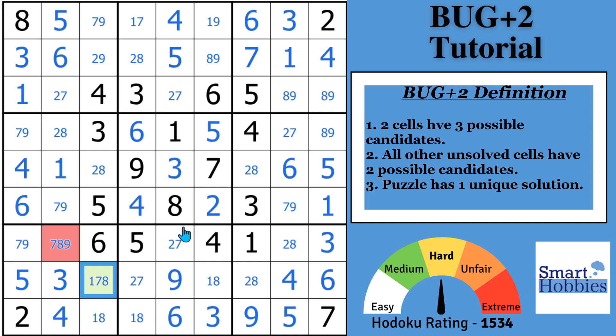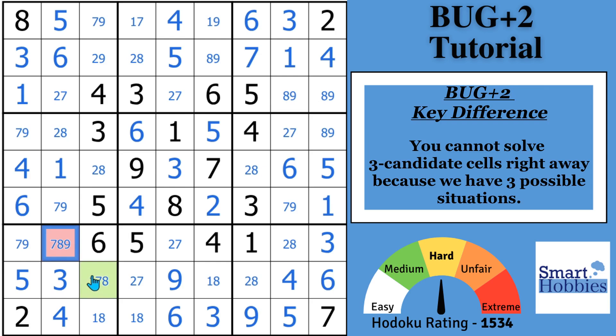But there's a key difference in how you solve a BUG Plus 2 versus a BUG Plus 1. I'm about to show you that. You cannot just plug in a seven here and an eight right here, and the puzzle will solve. That is not necessarily the case with a BUG Plus 2. In fact, you get a little bit less limited information, and most times, even if you plug that candidate in there, you may not easily solve the puzzle.